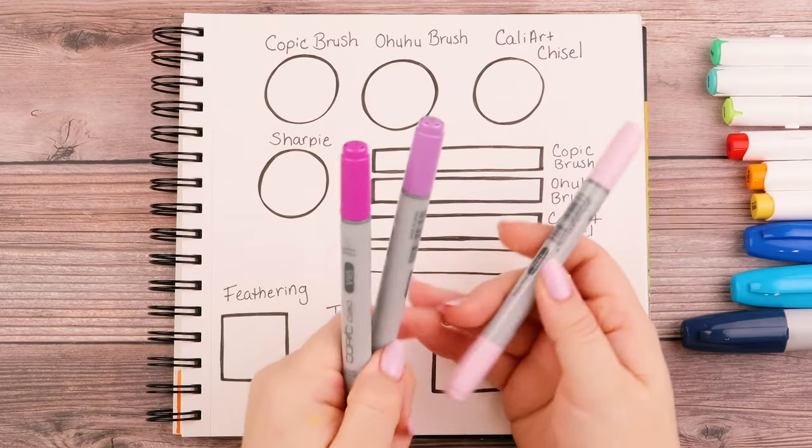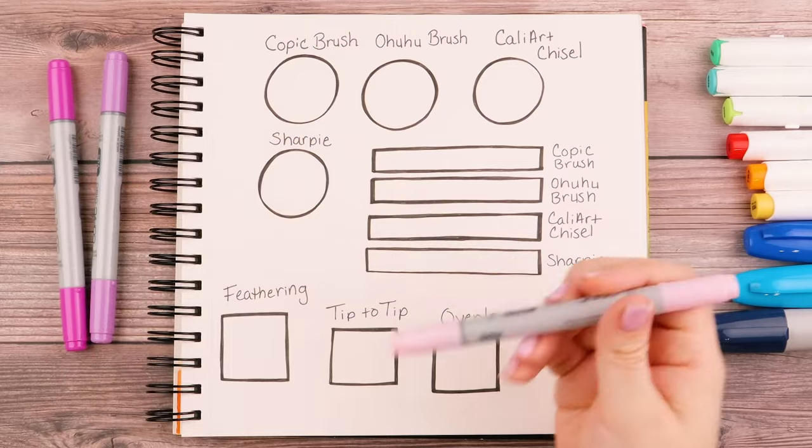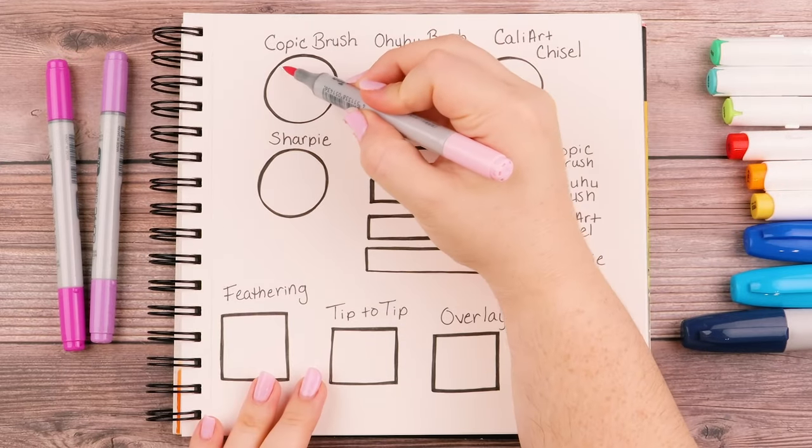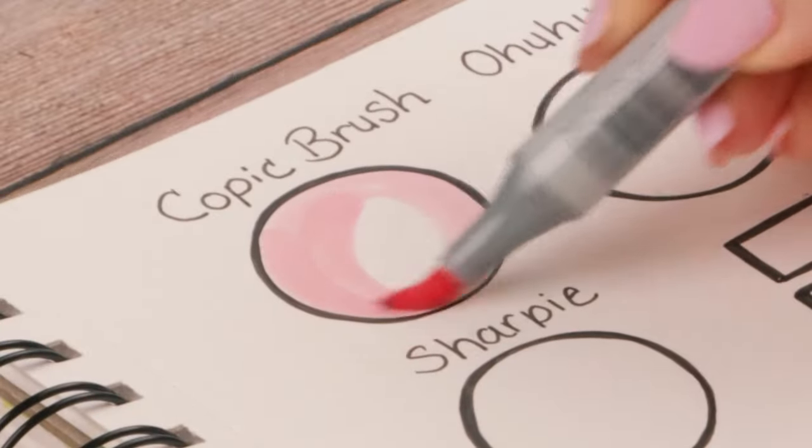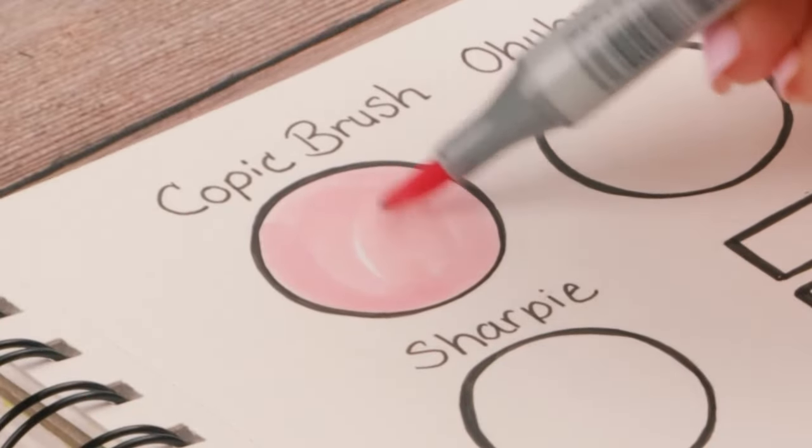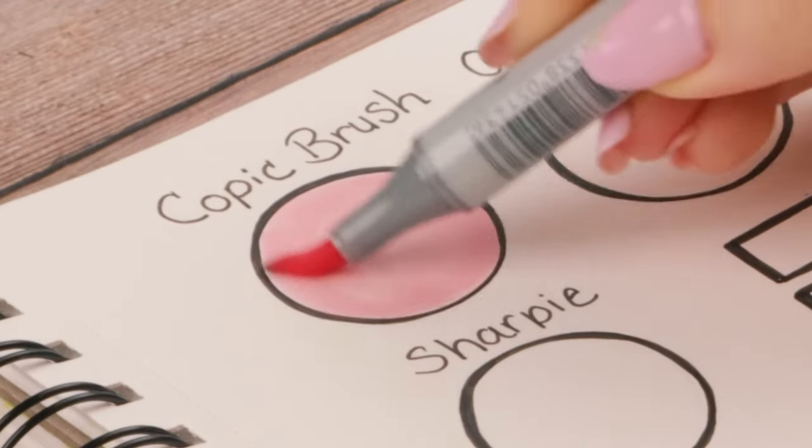First, I'm going to start out with the Copic Chow brush markers. I'm going to begin with my lightest color and just color this circle in. I personally like to lay down a base color first, which is always my lightest color.